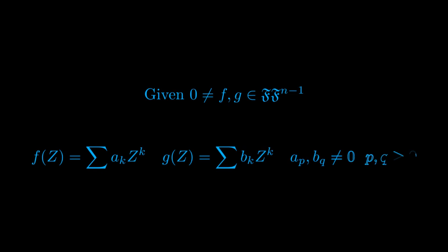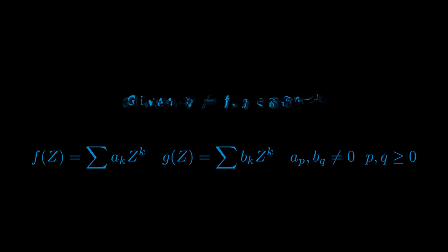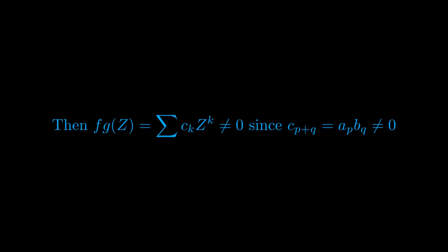Supposing that F — the ring of formal power series in n−1 complex variables — is an integral domain, let us prove that the ring of formal power series over F is also an integral domain. To do so, pick two functions f and g not equal to 0, meaning each has at least one non-zero coefficient, say A and B respectively. Then their product will have a non-zero coefficient C = A·B, which is non-zero by the induction hypothesis that F_{n−1} is an integral domain.